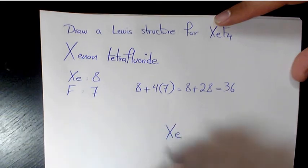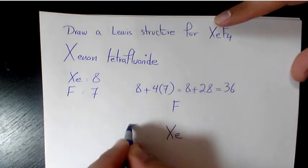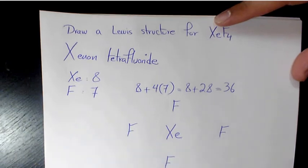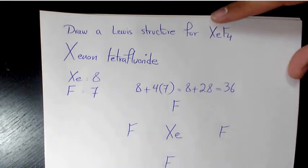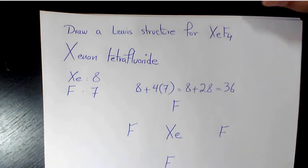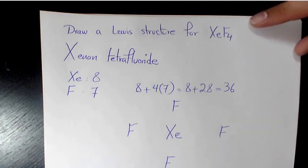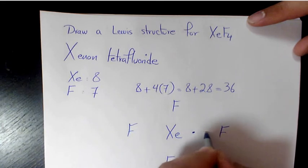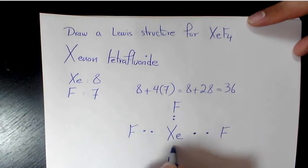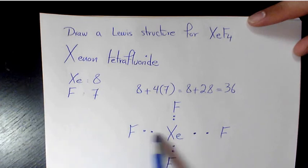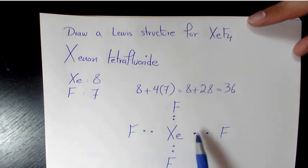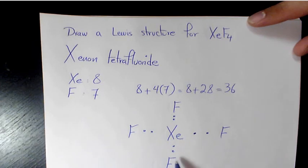What we need to do is place xenon as the central element with F, F, F, and F around it. We then place one pair of electrons between each adjacent pair of atoms. Every two dots represents a bonding electron pair, so we place one pair of electrons between each pair of atoms, forming single covalent bonds.